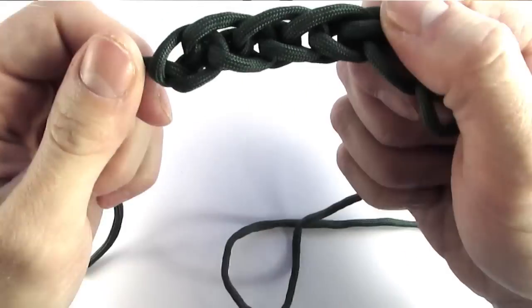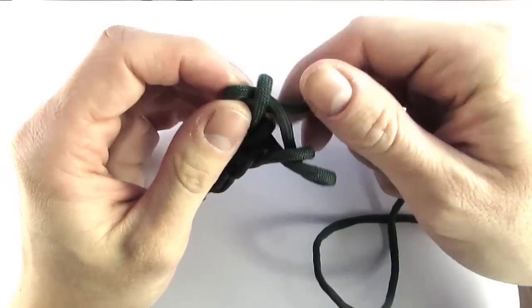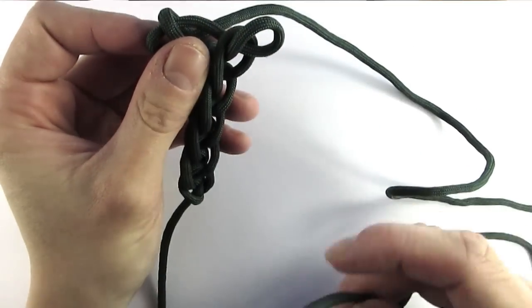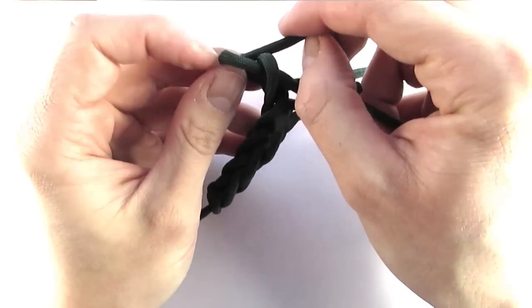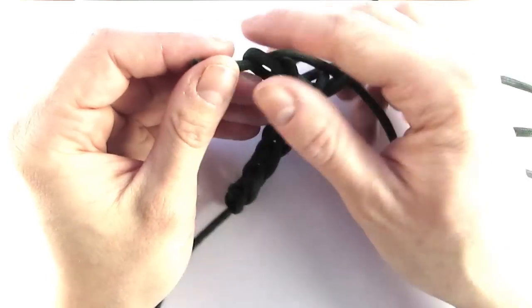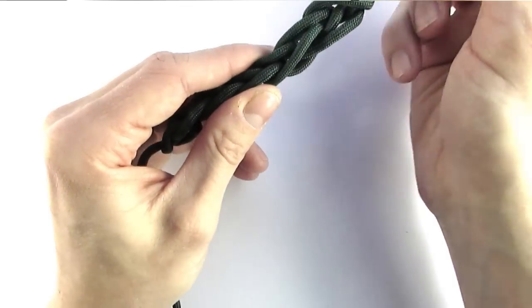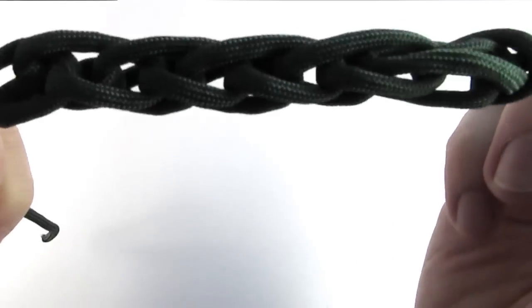Okay, so this is how it looks like. And then to finish it off, simply take your end and place it through the holes where your fingers were, then pull the cord through. And this is going to lock off your spool knitting. That's it guys, enjoy.